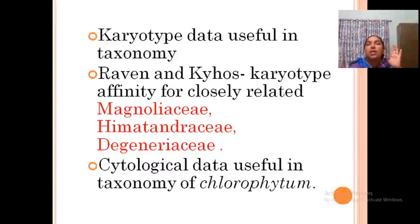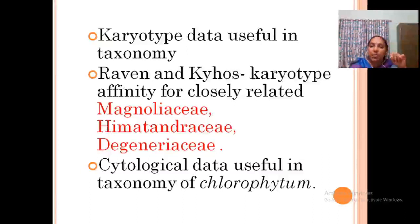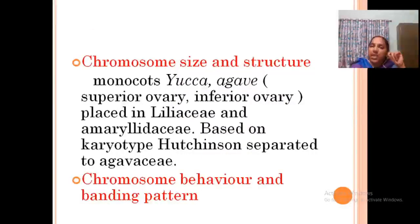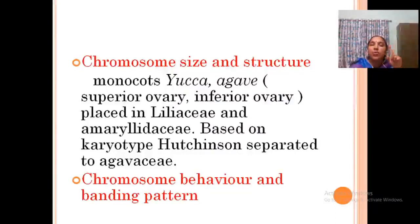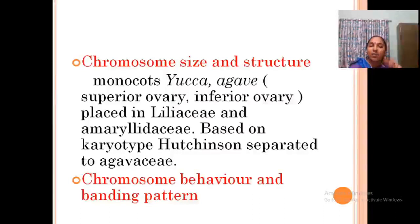These three families are important in discussions of the origin of angiosperms, and their relationships were studied using karyotype analysis. Cytological data are also useful in the taxonomy of Chlorophytum. Regarding chromosome size and structure: Yucca has a superior ovary and Agave has an inferior ovary; both belong to Liliaceae. But Hutchinson, through karyotype analysis, separated Agave into a new family, Agavaceae.